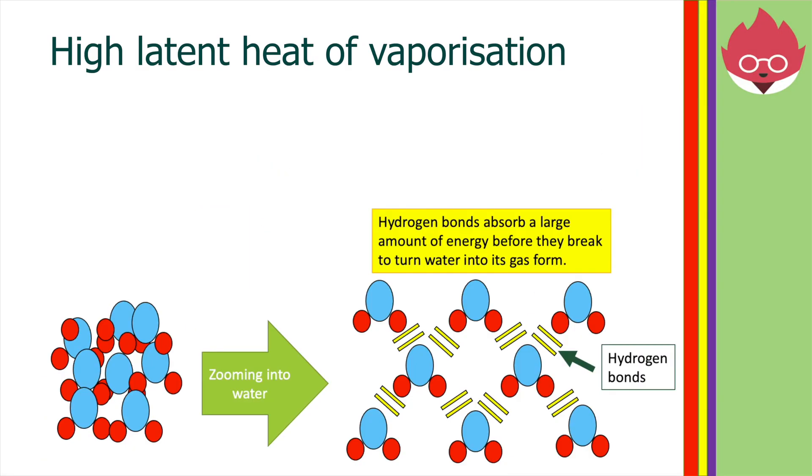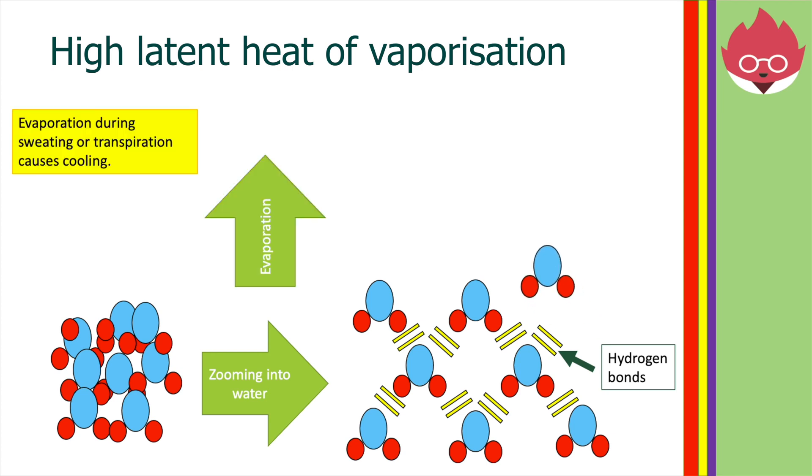We can understand latent heat of vaporization better by looking at this diagram. In this diagram, if we zoomed into the water molecules, we can see that they're held together by hydrogen bonds. These hydrogen bonds need to absorb large amounts of energy before they can break and turn water into its gas form. When water does eventually evaporate, it takes with it this heat energy, causing the cooling effect we talked about earlier.